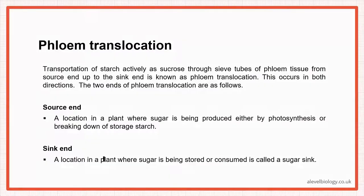When talking about phloem translocation, it is sucrose that is transported through the sieve tubes of phloem tissue from the source end to the sink end. The source is the place where the stash or sucrose is going to move from — where it is stored or produced. The sink is the place where sucrose is actually going to be consumed or utilized. These ends are not fixed — translocation occurs in both directions.